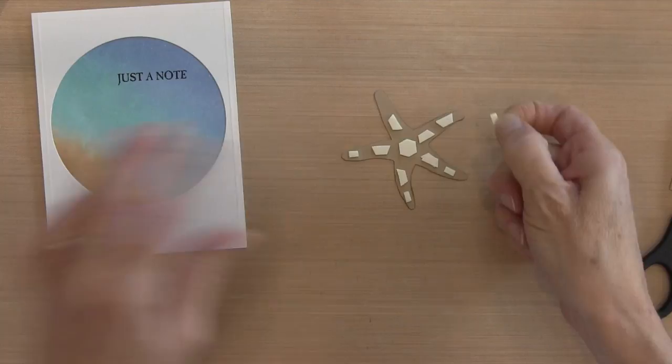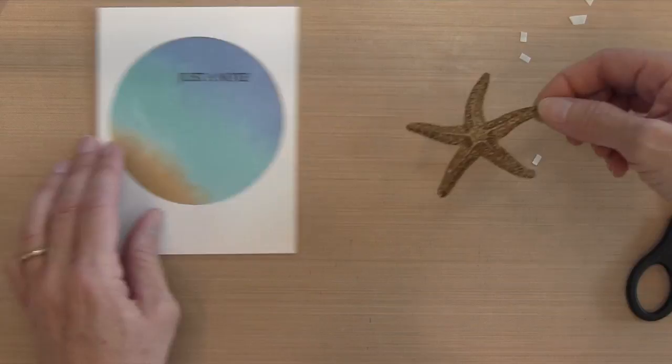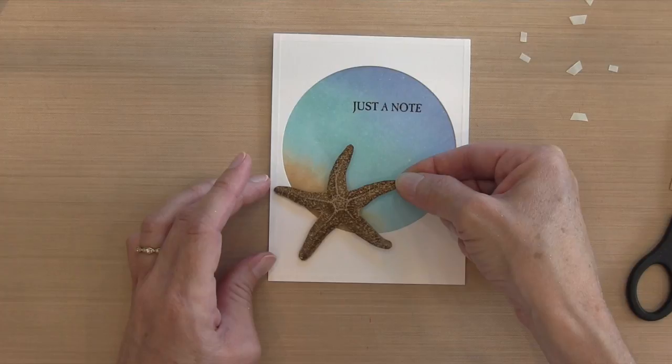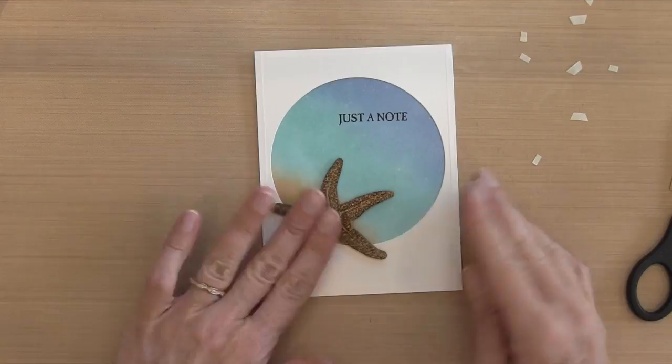I think the white really makes it stand out when the white is in the background, so it's kind of like on the beach a little bit and in the water as well. That is the card for today. I think this starfish is really cool-looking. I hope you enjoyed that and I will see you next time. Thanks for watching!